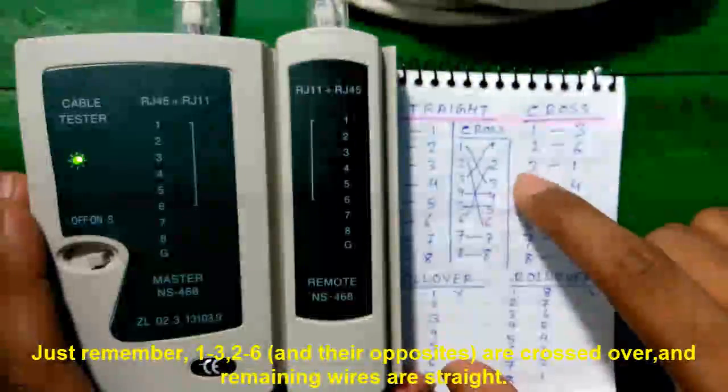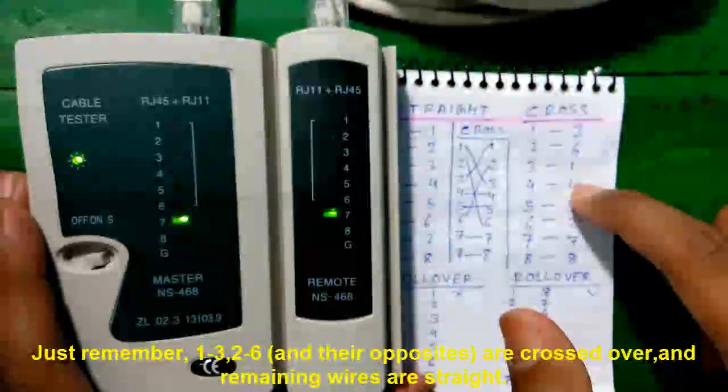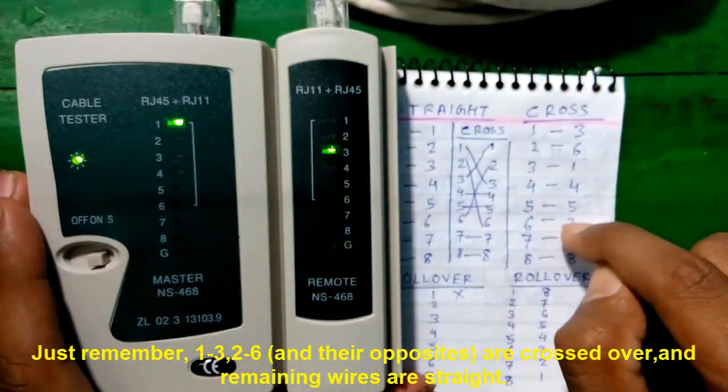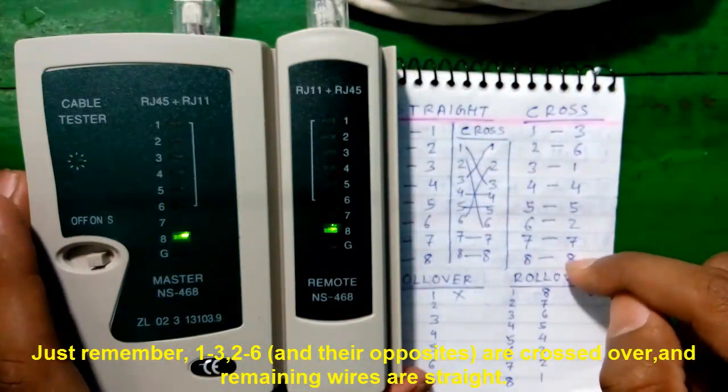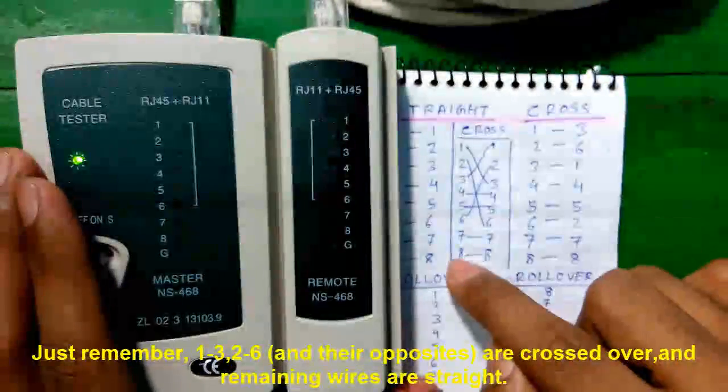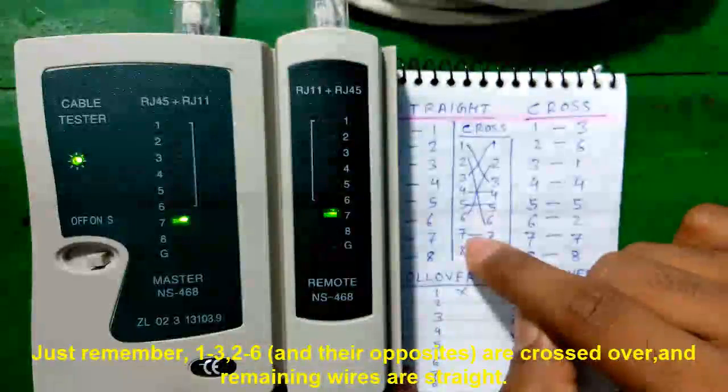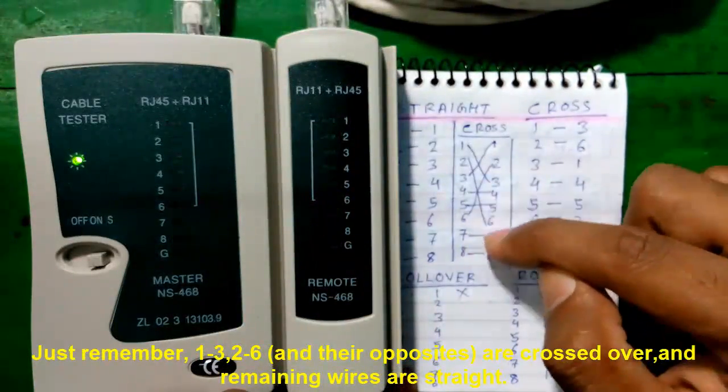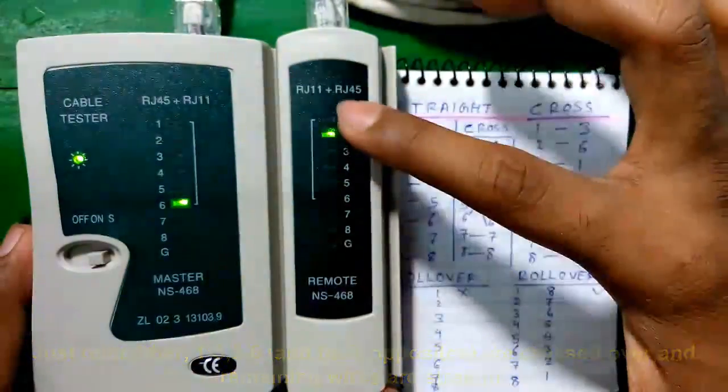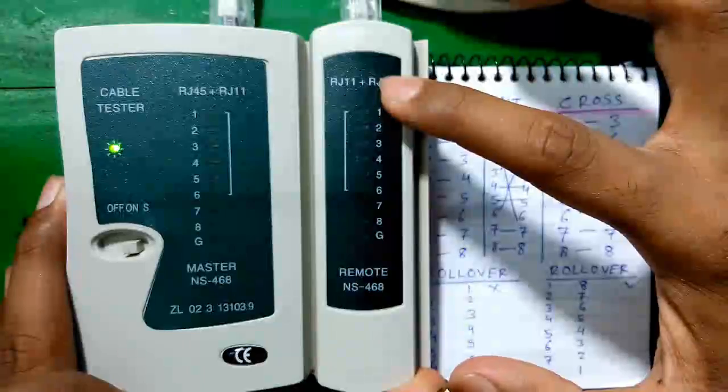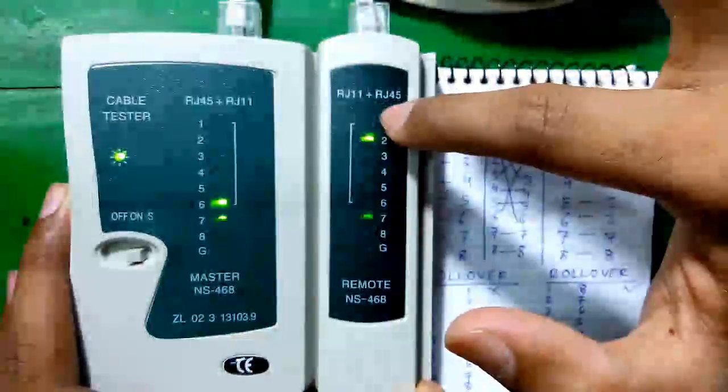One to three, two to six, again three to one, which is opposite of one to three, four to four is straight, five to five is straight, six to two, which is opposite of two to six, seven to seven and eight to eight are straight. So it's called crossover because some of the cables are crossed with each other and remaining cables are straight. You can verify it here. So since all the eight LEDs are glowing, all the eight pins are okay and the connectivity is crossover.